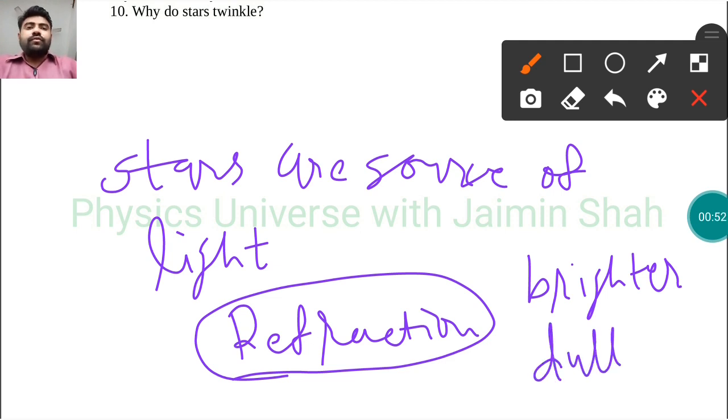star. So the combination of brightness and dullness of the stars is why we can see stars twinkling. Otherwise